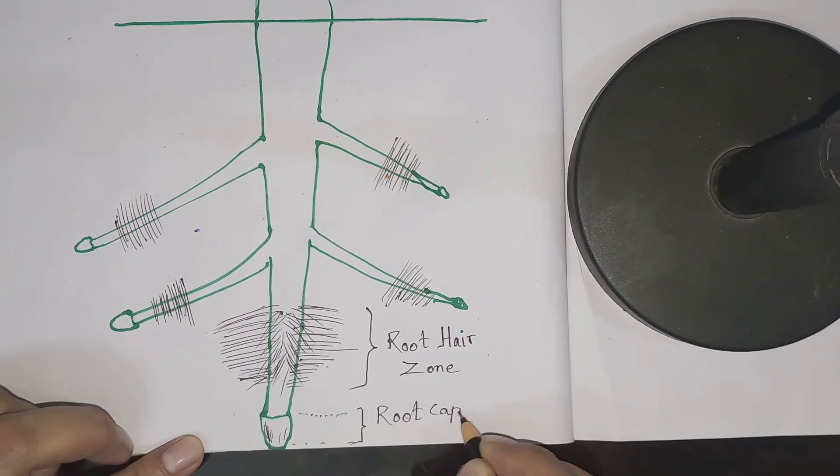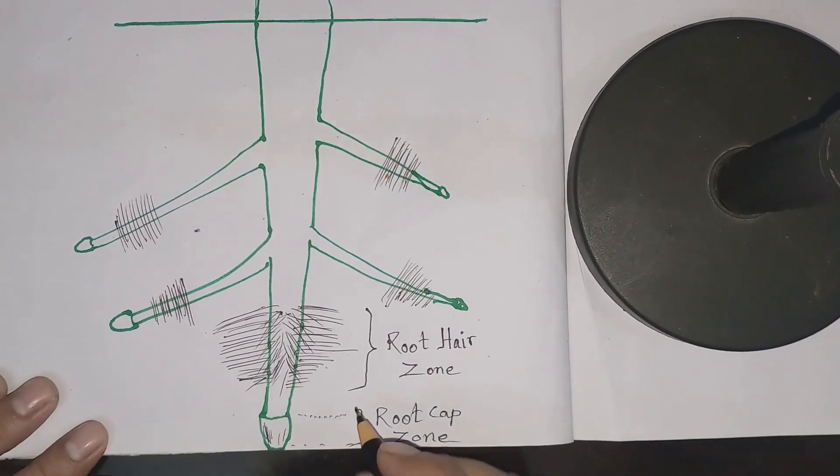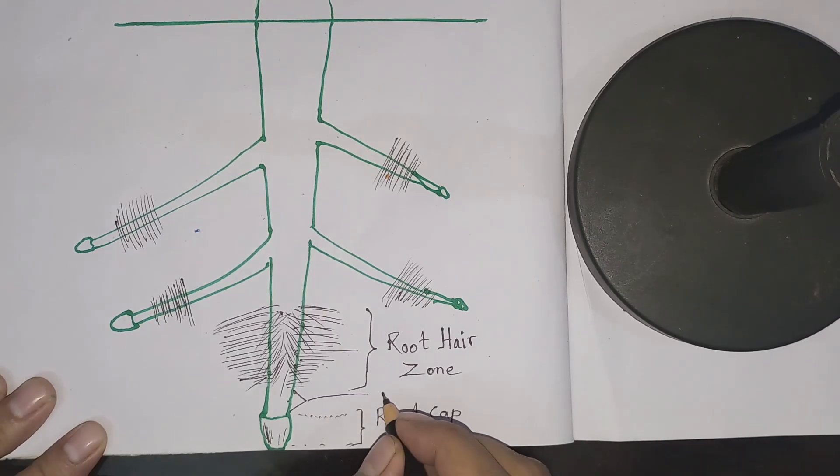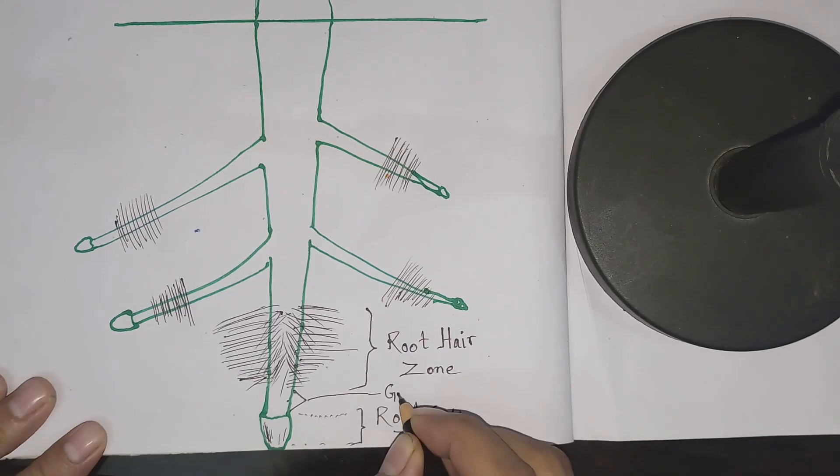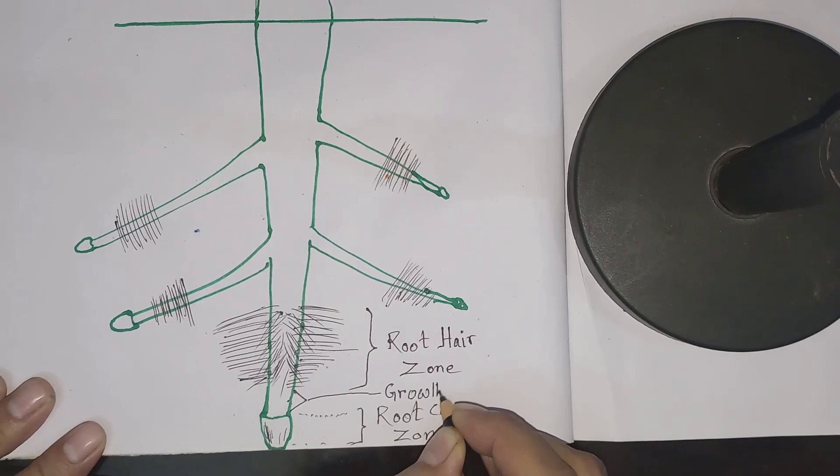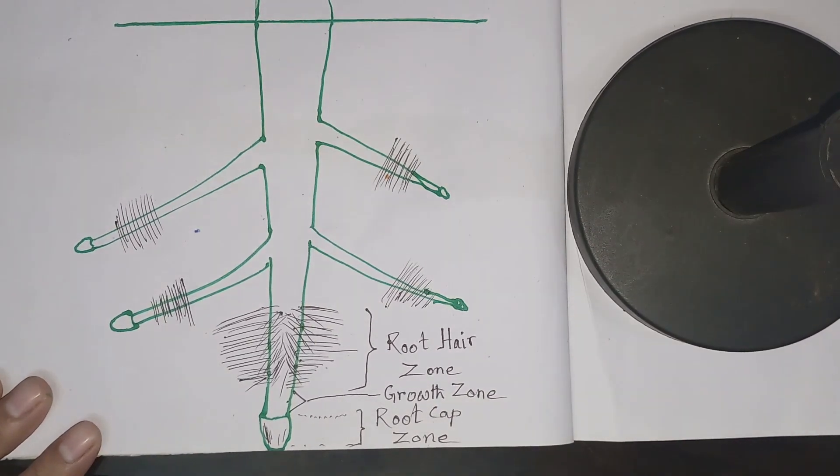And now the region that is located in between the root cap zone and root hair zone is known as the growth zone, because here we will find the meristematic tissue in which the cells are always dividing by the process of cell division mitosis.